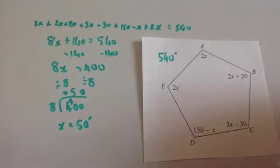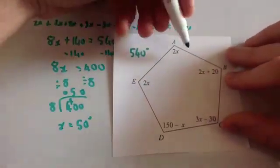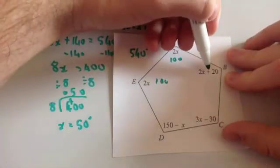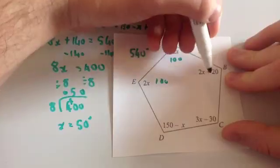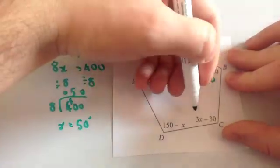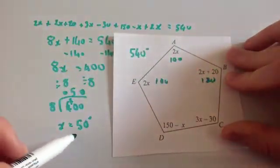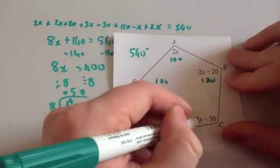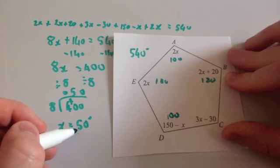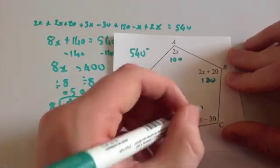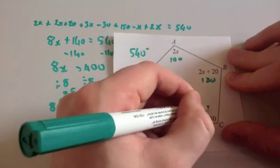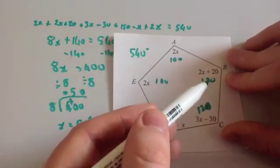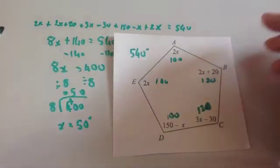Let's put all the angles on the diagram. 2x is 100°. The next 2x angle is also 100°. 2x plus 20 is 120°. 150 minus x is 100°. And 3x minus 30 is 150 minus 30, which is 120°. Adding them together: 100, 200, 300, 400, 500, plus 20, 40 — gives 540 degrees. Fantastic!